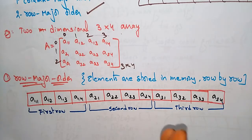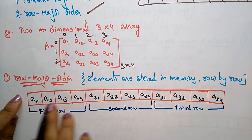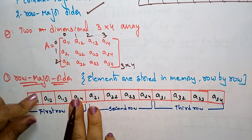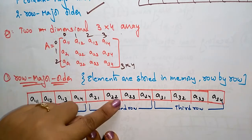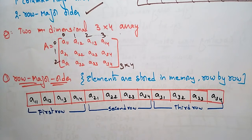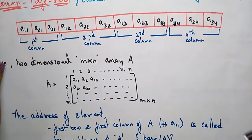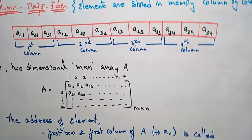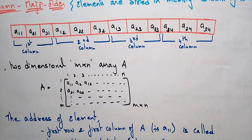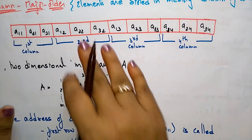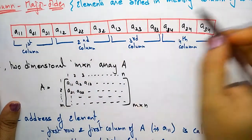So this is how the elements of a two dimensional array are stored in memory. In row major order it stores row by row: first row, second row, third row. Now in column major order, the elements are stored in memory column by column, whereas in row major order the elements are stored row by row.